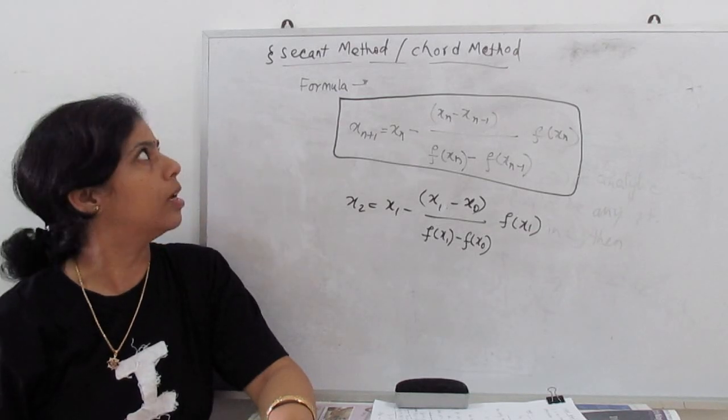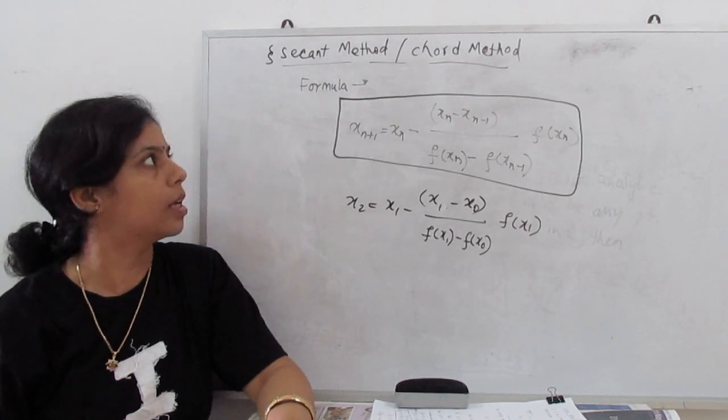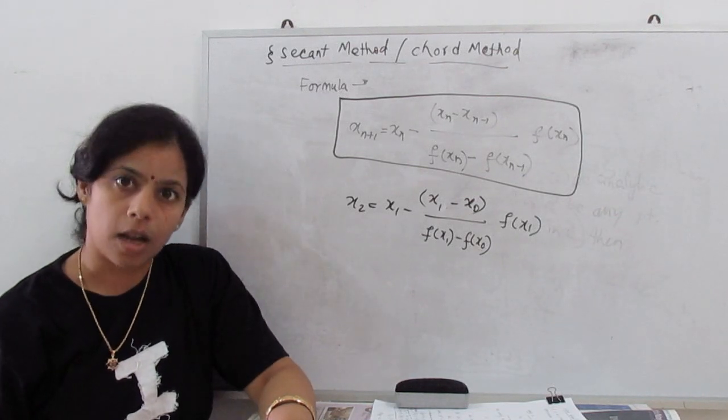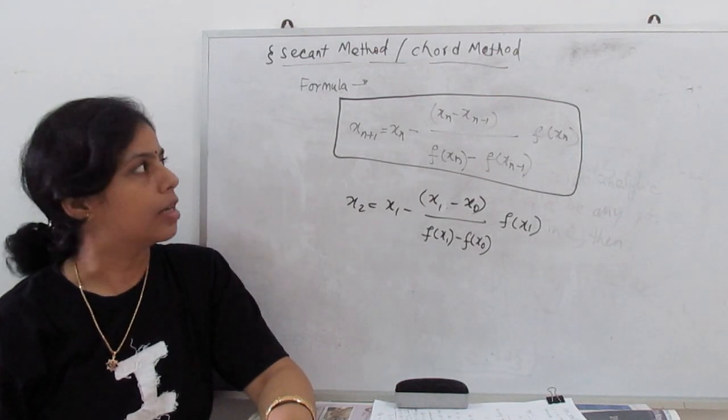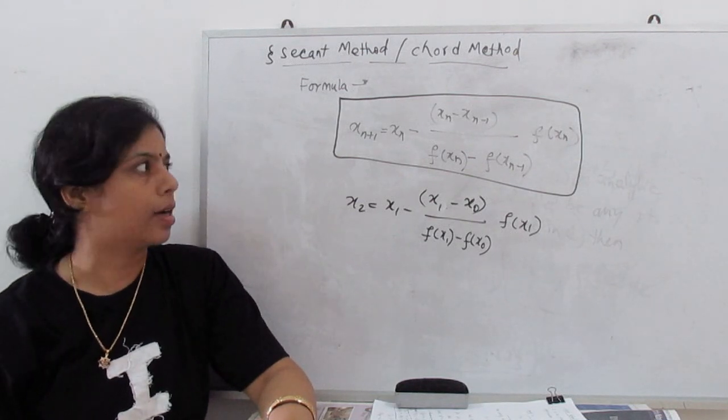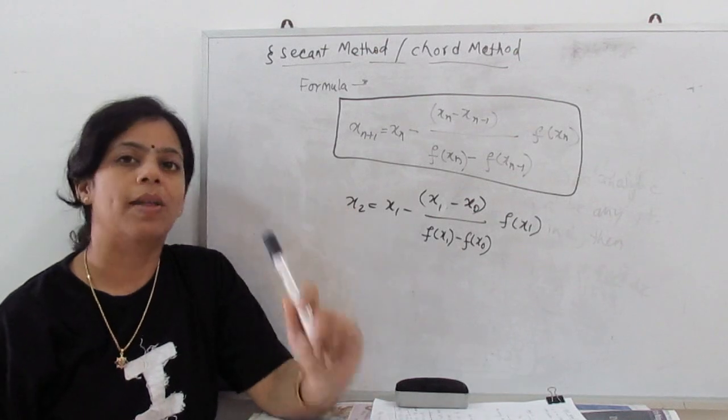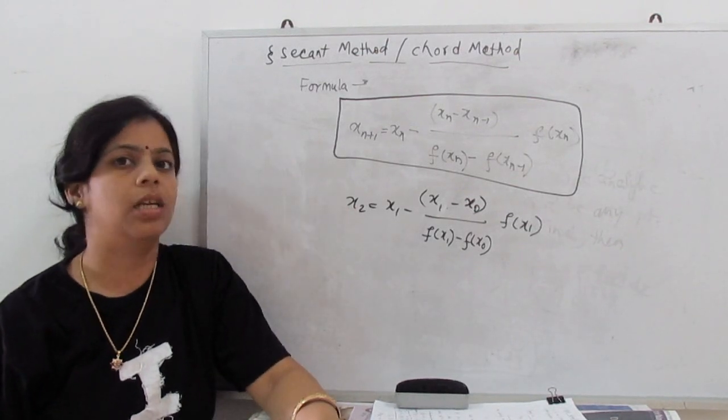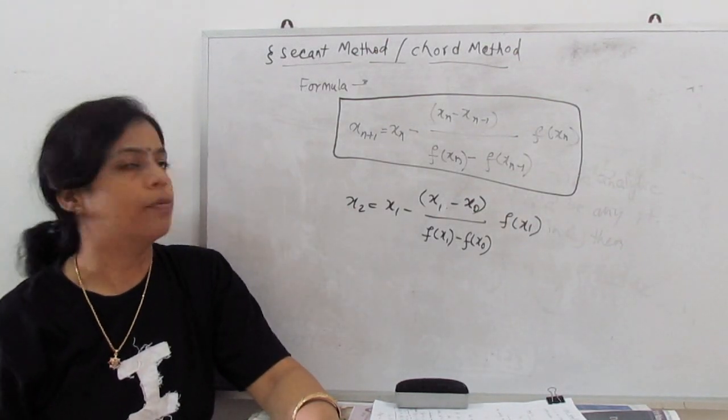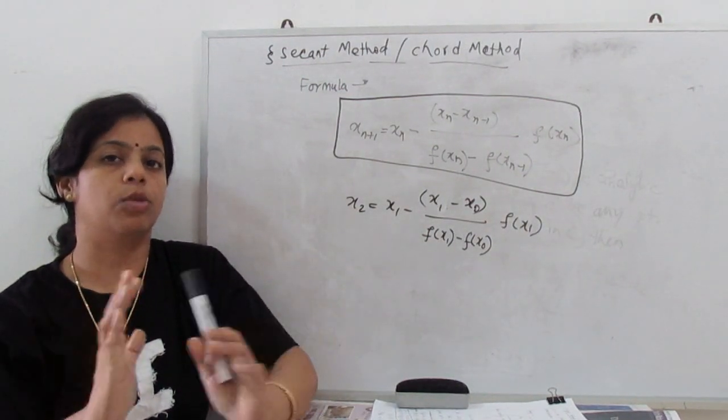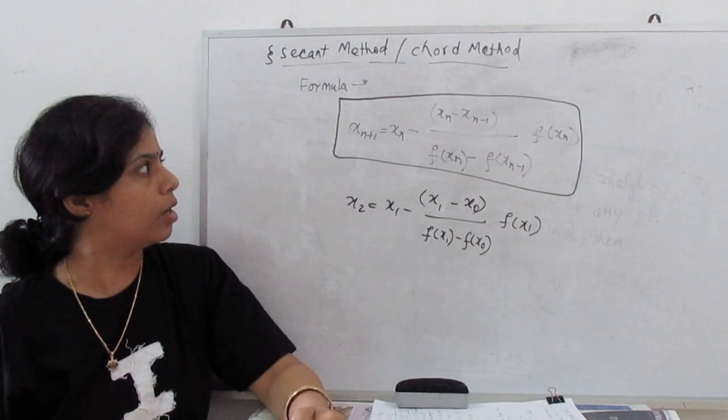Welcome to my new video. Today we learn about the secant method, or chord method. In this method, we learn how to solve transcendental equations. We need two initial values of the given function. We consider the root lies between these two values, and then we start with both values.